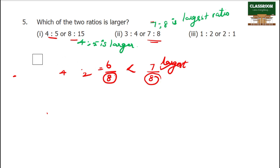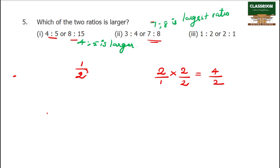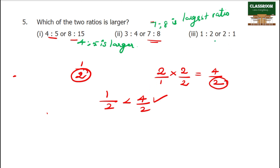Next question: 1 is to 2 or 2 is to 1. So 1 by 2 compared to 2 by 1. Common denominator: 2 by 2 gives 4 by 2. 1 by 2 is less than 4 by 2. So 2 is to 1 is the largest ratio.